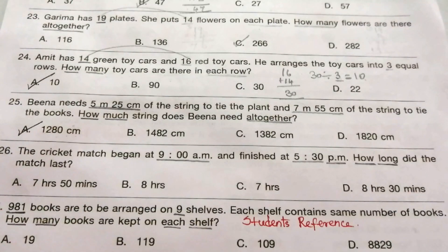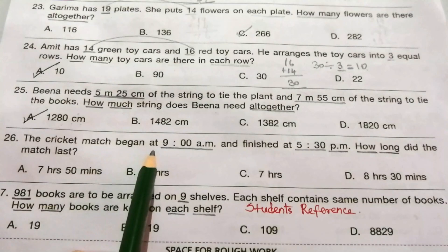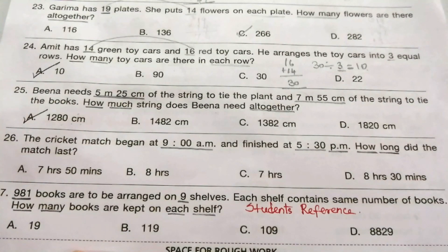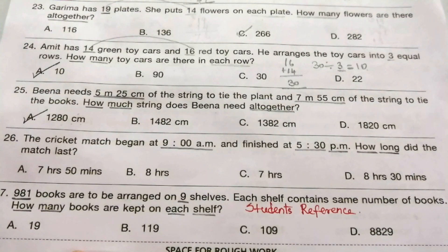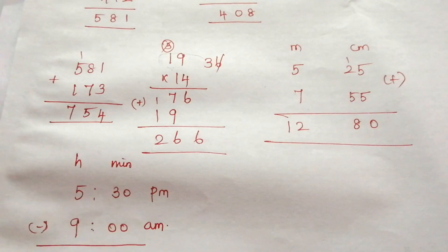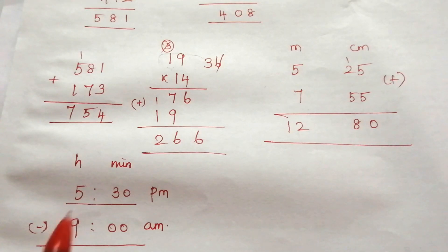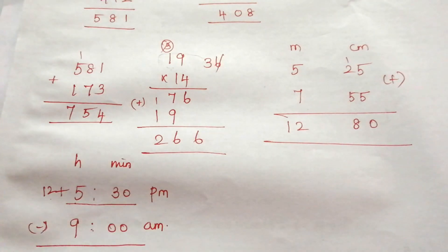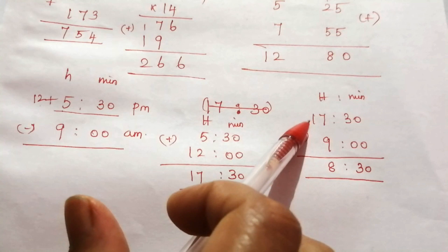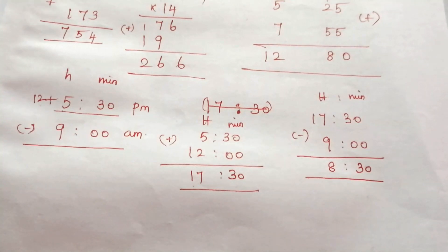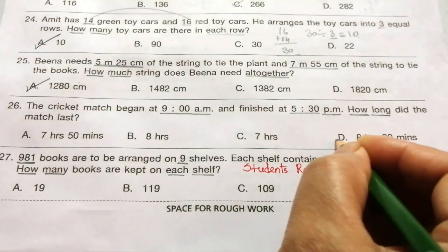Question 26: A cricket match began at 9 AM and finished at 5:30 PM. How long did the match last? We subtract 9:00 from 5:30, but first convert 5:30 PM to 24-hour clock by adding 12: that gives 17:30. Subtracting 9:00 from 17:30 gives 8 hours 30 minutes. Our answer is D: 8 hours 30 minutes.